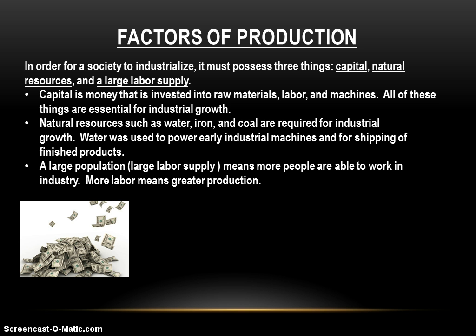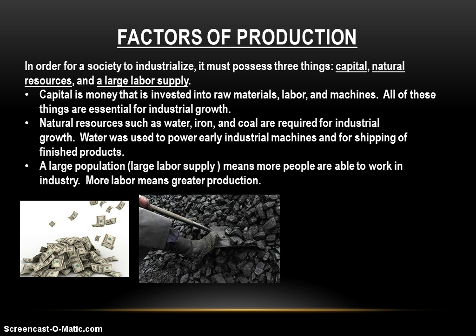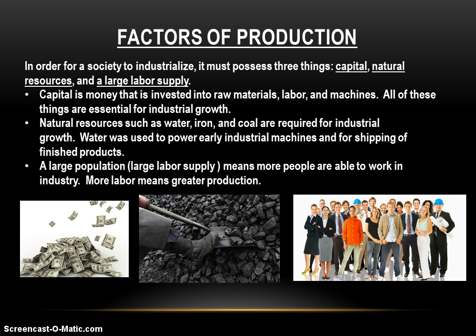To become industrialized, a society must also have ample supplies of natural resources — things like water, coal, and iron ore, which are all required for industrial growth. Water is going to power early industrial machines and is great for shipping finished products. Coal and iron ore will eventually build and power industrial machinery. The last thing you need is a large population, because that population provides a labor supply. More people means more people able to work in industry, and more labor means greater production, which means more money and more industrialization.